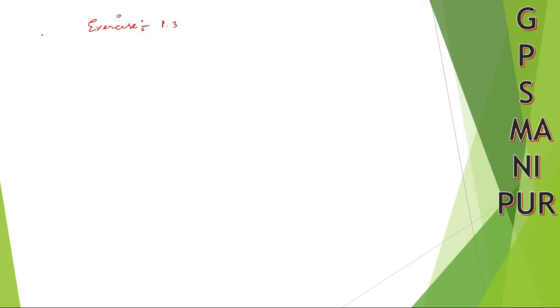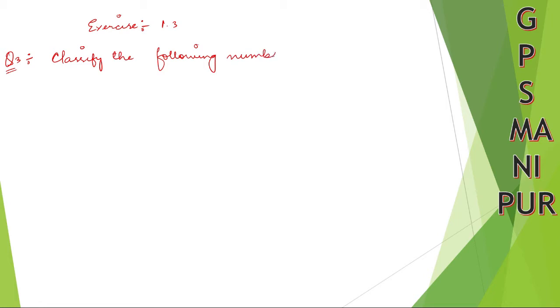We are dealing with Exercise 1.3, Question number 3. The question says: classify the following numbers as rational or irrational.